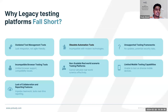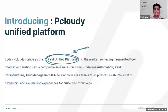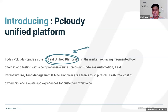Let me quickly introduce pCloudy's new unified platform. pCloudy today stands as the first unified platform in the market, replacing all fragmented tool chains. With the unified platform, we have a comprehensive suite combining codeless automation, infrastructure, and test management along with built-in AI and ML capabilities. This empowers agile teams to ship faster, helps reduce the total cost of ownership, and elevates user app experiences for customers worldwide.